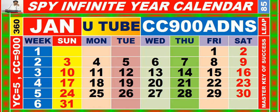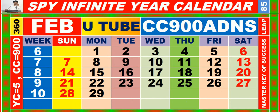Calendar for the month of January having calendar code equal to 9-0-0. Calendar for the month of February having calendar code equal to 9-0-0.